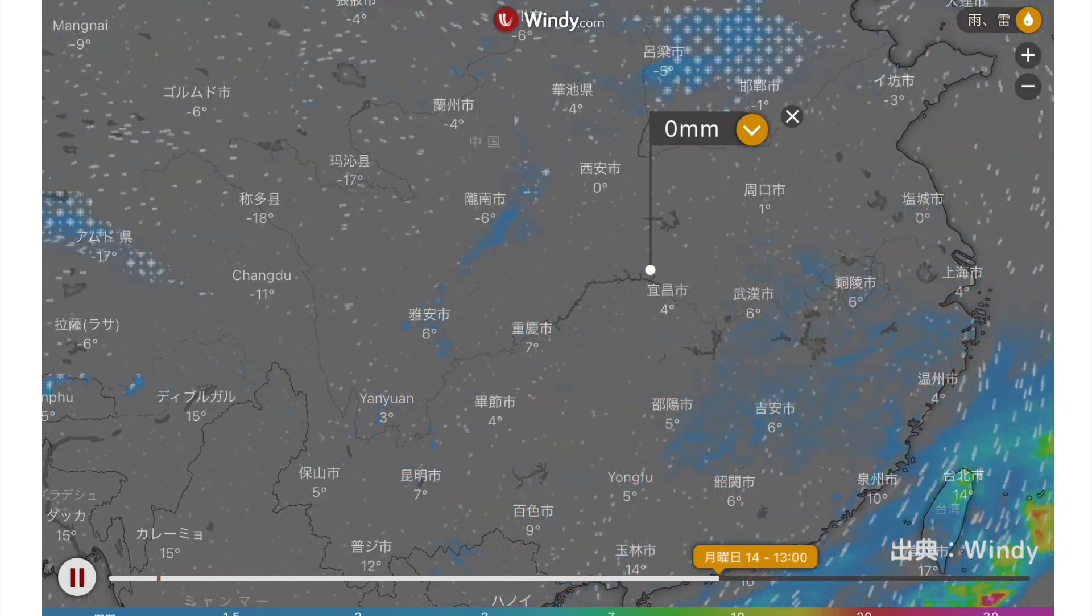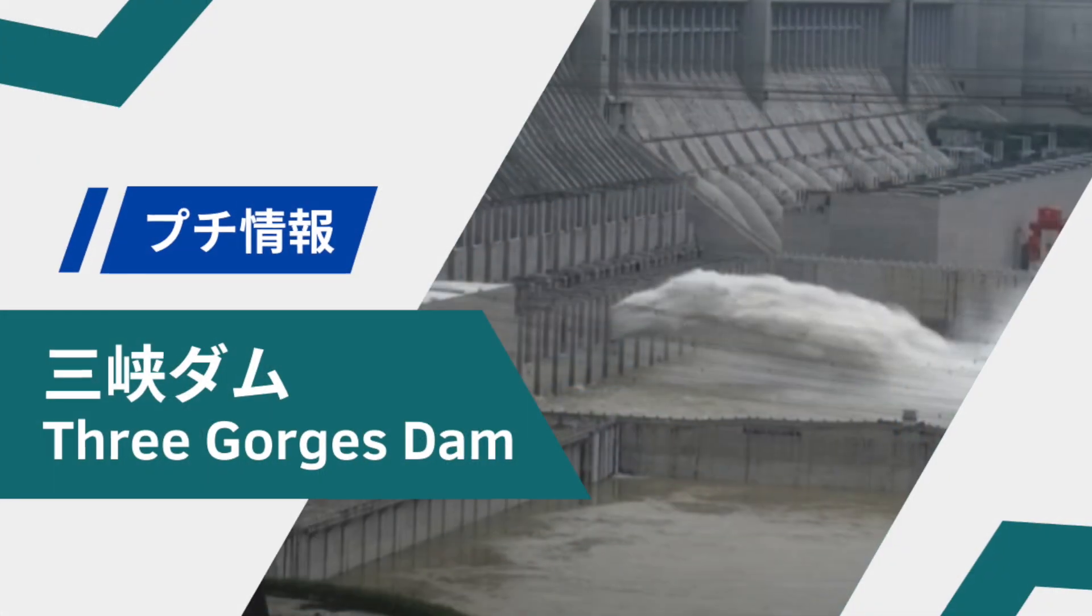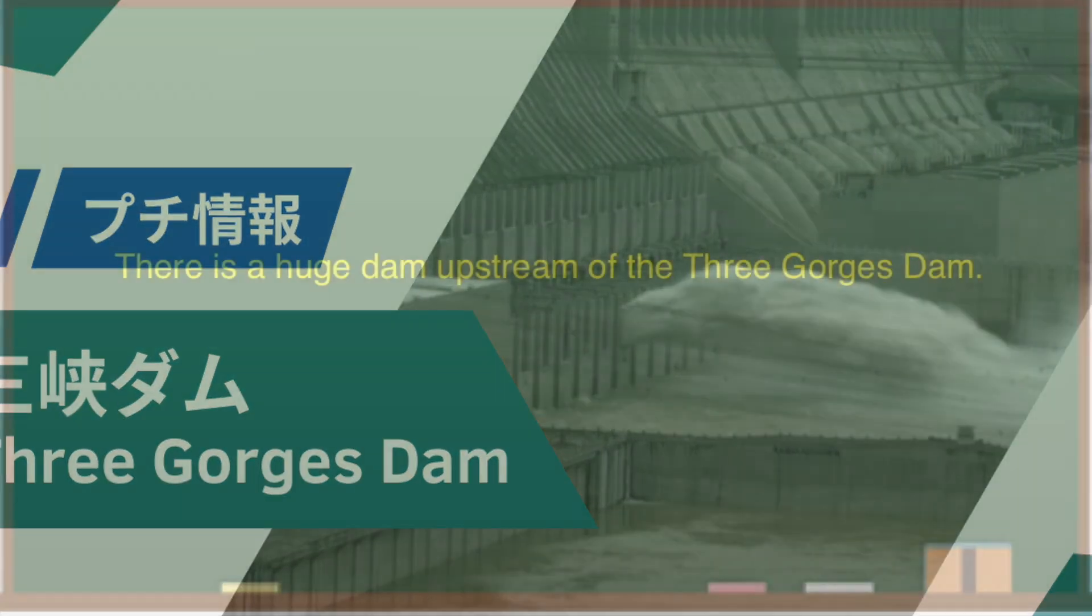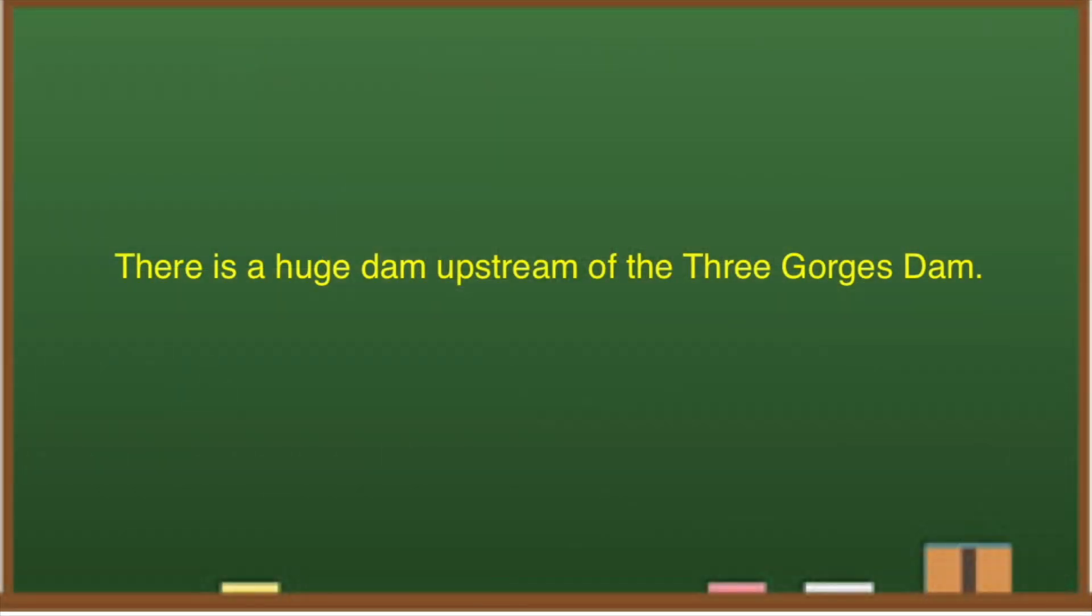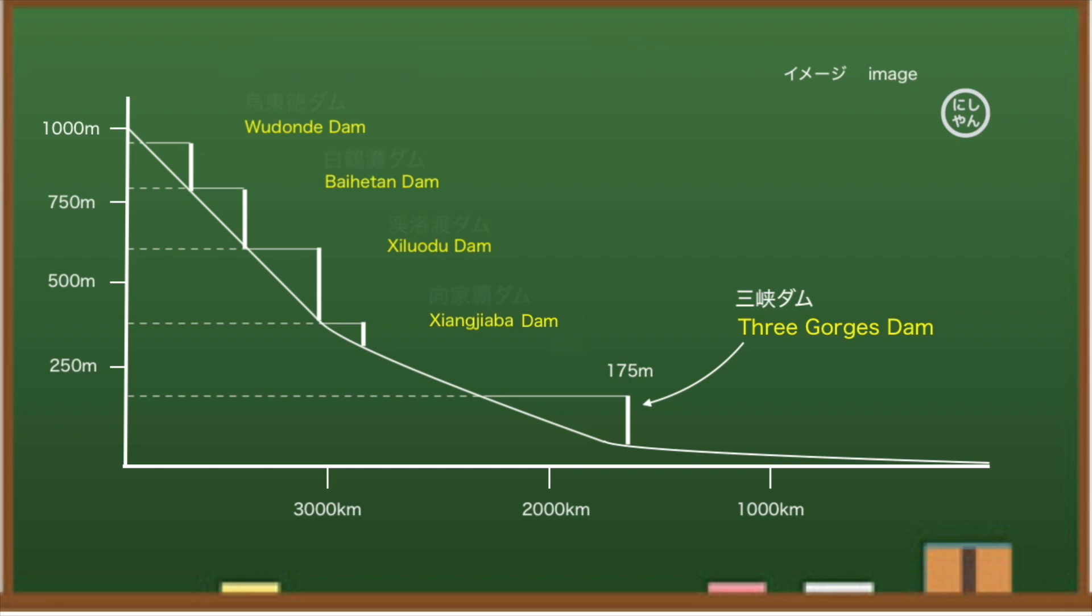As it gets warmer in the future, thawed water will be added. There is a huge dam upstream of the Three Gorges Dam. I told you that a huge dam is being built upstream of the Three Gorges Dam, but I checked the positional relationship. Please note that the figure is a rough image. The Three Gorges Dam is about 1,600 kilometers from the distant coastal area, and it seems that there are four huge dams upstream. Compared to the vicinity of the Three Gorges Dam, it is steeper and the altitude is higher.